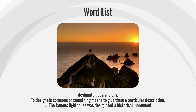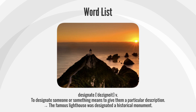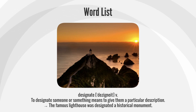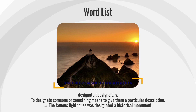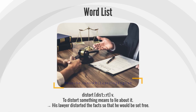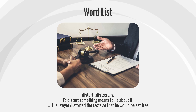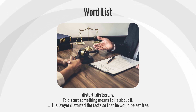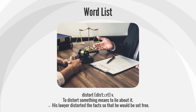Designate — to designate someone or something means to give them a particular description. The famous lighthouse was designated a historical monument. Distort — to distort something means to lie about it. His lawyer distorted the facts so that he would be set free.